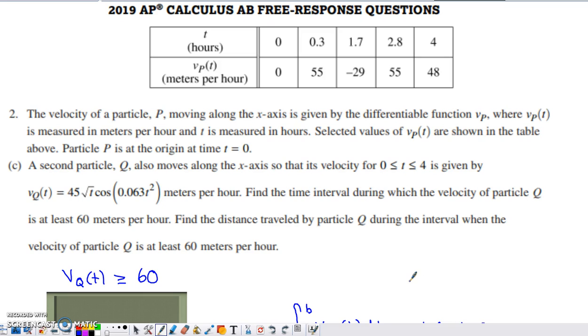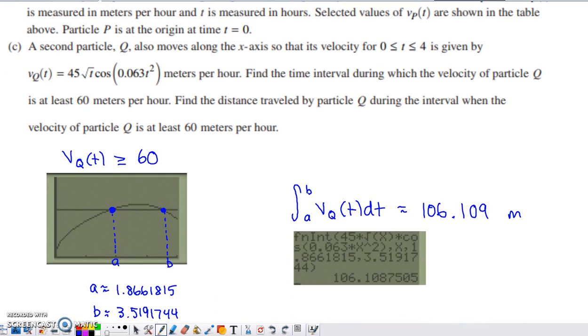Part C introduces a new particle. Particle Q is also moving on the x-axis. Its velocity on the interval 0, 4 is given by this function, also measured in meters per hour, so no unit conversion necessary to make comparisons between P and Q. We want to find the time interval during which the velocity of particle Q is at least 60 meters per hour. Now that I reread this question, I don't know that I necessarily explicitly stated that, so my work on the screen here is off a little bit. We'll talk about how to modify it in a few seconds. And then it goes on to say, find the distance traveled by particle Q during the interval when the velocity of particle Q is at least 60 meters per hour.